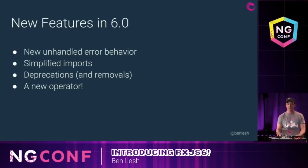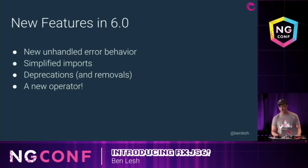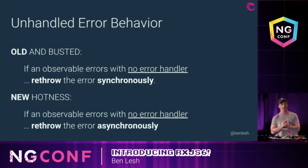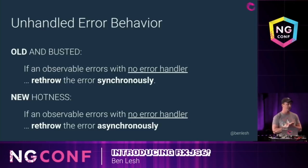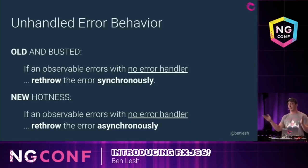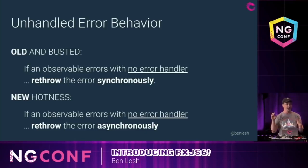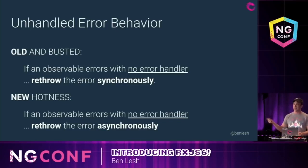What's new in 6 is we've got new unhandled error behavior. This is a breaking change from 5. The old way that every previous version of RxJS did this was: if you have an unhandled error — meaning an error that gets all the way down to the bottom of your chain of observation and you don't have an error handler there — it's going to re-throw that error synchronously.